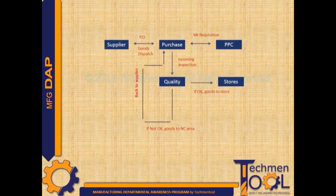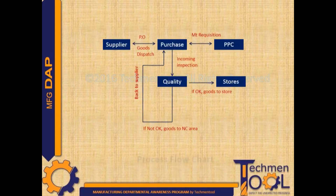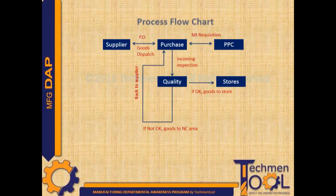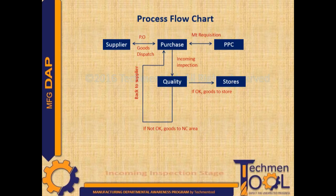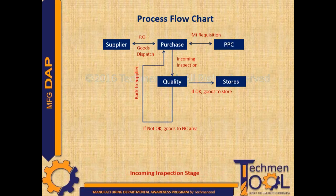This is the general process flowchart for the incoming stage. After receipt of goods from the supplier, the purchase department sends it to quality for incoming inspection activities. During inspection, if goods are OK, then they go to the store.